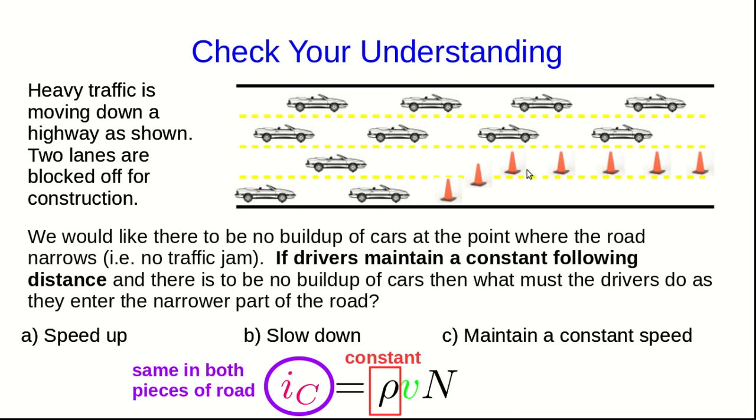In other words, the drivers have to speed up as they enter the narrow piece of road if there's to be no traffic jam. This, in fact, is why traffic jams happen at narrowings of roads, because often the drivers cannot or are unwilling to speed up in the narrower piece of road, and they may be unable or unwilling to reduce their following distance as they go into the narrow part of road.